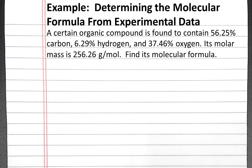In this example problem, we'll calculate the molecular formula for an organic compound from experimental data. Our problem states: a certain organic compound is found to contain 56.25% carbon, 6.29% hydrogen, and 37.46% oxygen. Its molar mass is 256.26 grams per mole. Find its molecular formula.